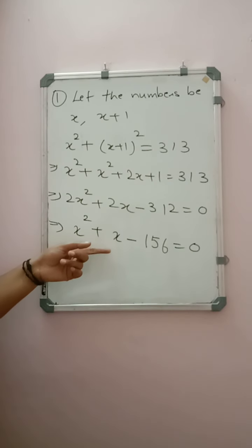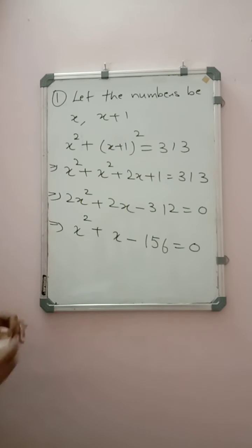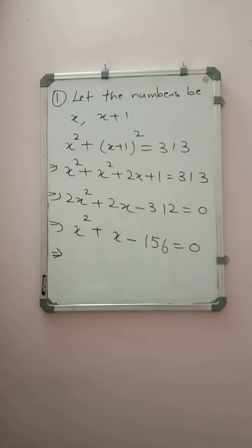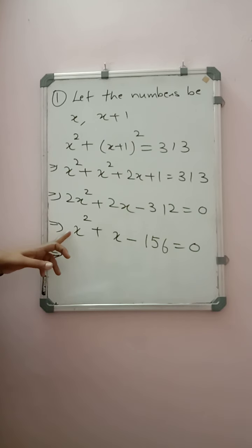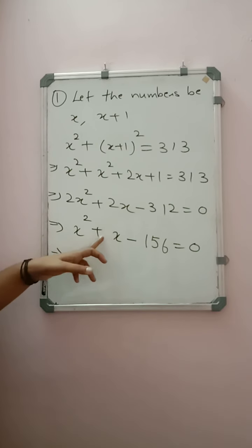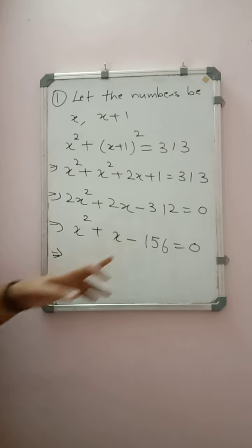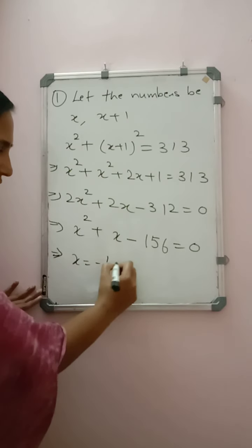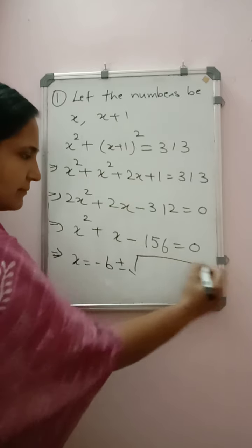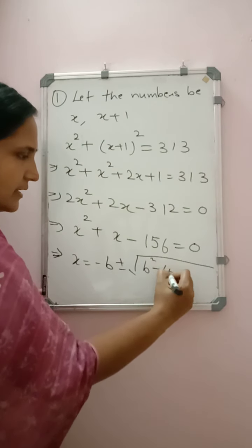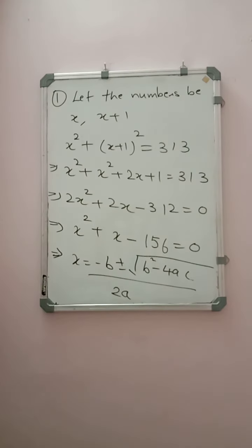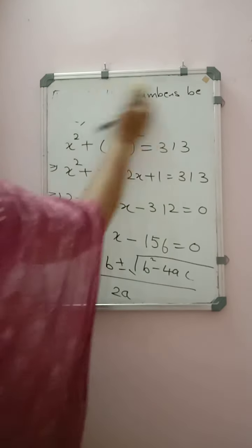You can solve the quadratic equation by your own method. I will show you how to solve using the quadratic formula. Here a = 1, b = 1, and c = −156. The quadratic formula is x = (−b ± √(b² − 4ac)) / 2a.